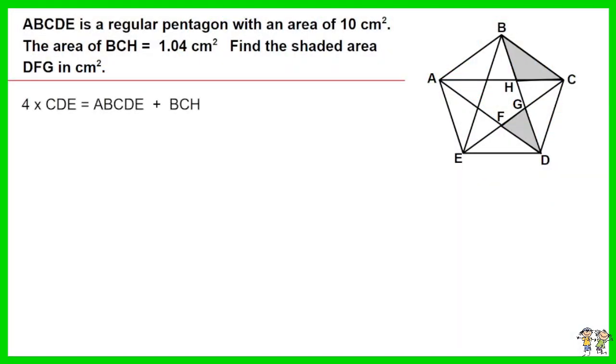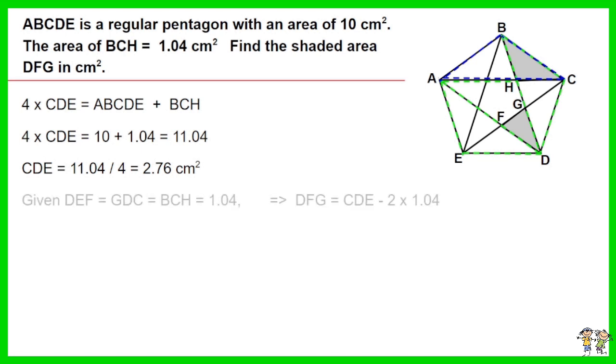ADE equals ACE equals ADH equals BCE equals ABC. However, BCE overlaps ABC with an area size of BCH. As such, 4 times CDE equals ABCDE plus BCH. Work out the equation: CDE equals 2.76 cm². Given DEF equals GDC equals BCH equals 1.04, thus DFG equals CDE minus 2 times 1.04.